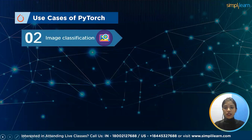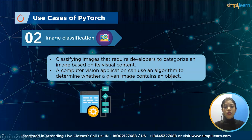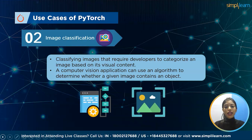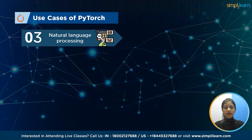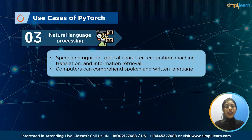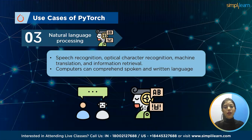Next, image classification: PyTorch employs an image classification algorithm that requires developers to categorize an image based on its visual content. A computer vision application, for example, can use an algorithm to determine whether a given image contains an object such as a car or bicycle. Object detection is simple for the human eye but difficult for computer vision. Next, natural language processing (NLP): NLP is a technology whose main components are speech recognition, optical character recognition, machine translation, and information retrieval. Computers can comprehend spoken and written languages with the help of NLP technology.